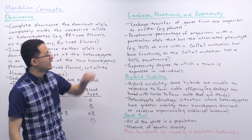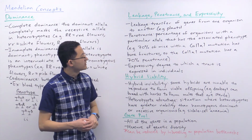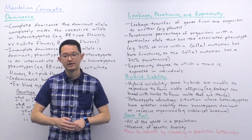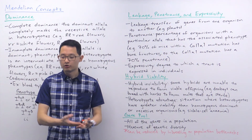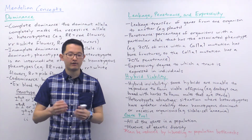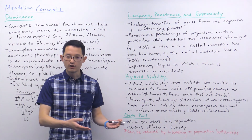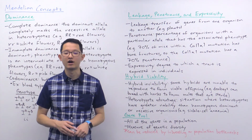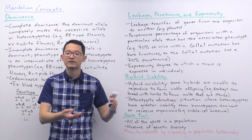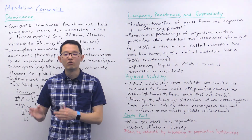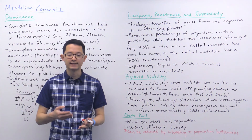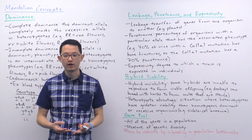Leakage refers to the transfer of genes from one organism to another. This is often discussed in the context of genetically modified organisms. For example, a crop could be genetically modified for pesticide resistance so farmers can apply pesticides that kill weeds but not crops. Leakage would be the transfer of this pesticide resistance gene from the crop to the weeds — a serious concern if weeds gain that resistance.